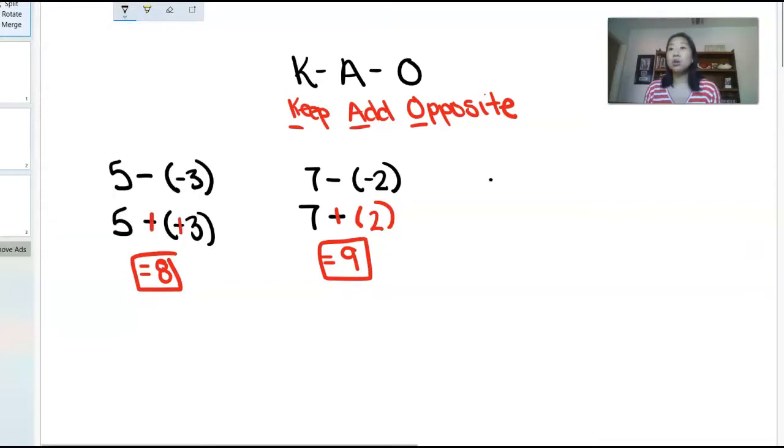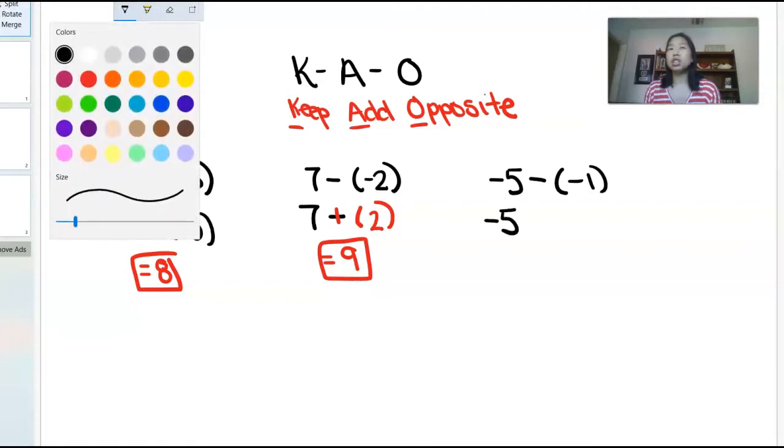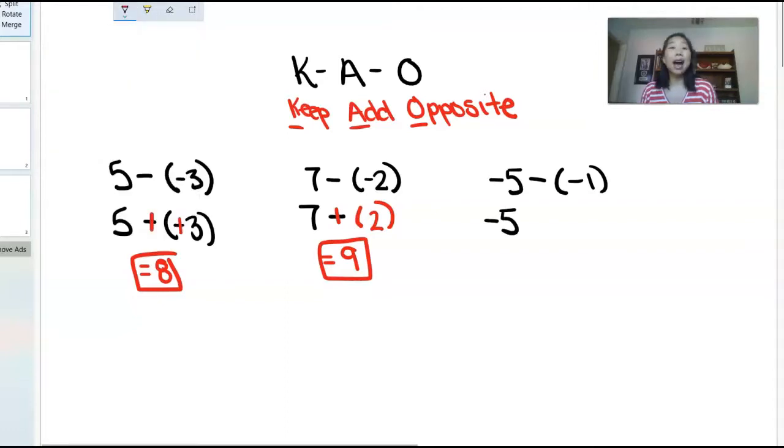So if I had a question like negative 5 minus negative 1, again, I'm going to keep the negative 5. And this is where your students are going to have to have a grasp of adding integers. You're going to change the subtract to an add. And then you're going to take the opposite of negative 1, which is positive 1. So now I have negative 5 plus 1.